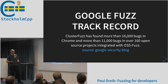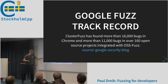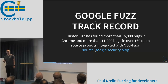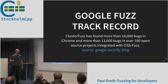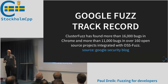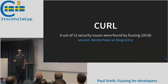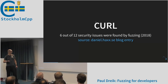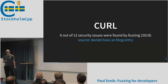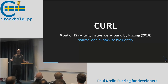Google has a lot of experience in fuzzing. They run something called ClusterFuzz — something like 10,000 CPU cores doing fuzzing 24/7. They've found 16,000 bugs in Chrome and more than 11,000 bugs in other open source projects through OSS-Fuzz. CURL is a well-known Swedish project; in 2018, six out of 12 security issues were found through fuzzing. So fuzzing really works.